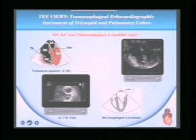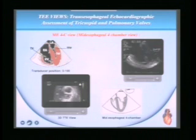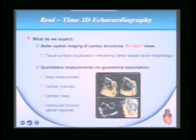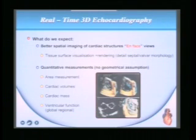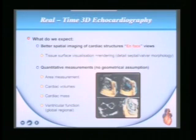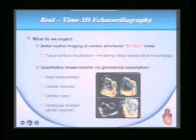You can see the 4-chamber view on 2D echo and then the same in 3D — here is the left ventricle, the right ventricle, the aortic valve, and this is what you see in the open and closed position in systole and diastole: the tricuspid valve. With real-time 3D echo, we expect better enhanced views — spatial imaging of all cardiac structures: mitral, tricuspid, aortic, LV, and RV. It gives very good quantitative measurement of areas and cardiac volumes, with a full-volume loop telling us about quantification, cardiac mass, and global ventricular function.